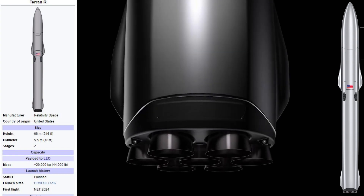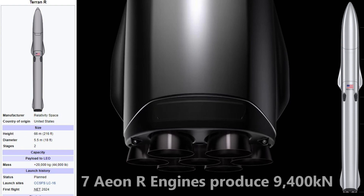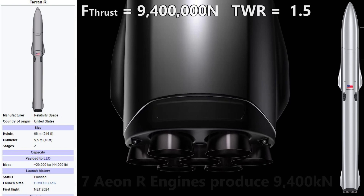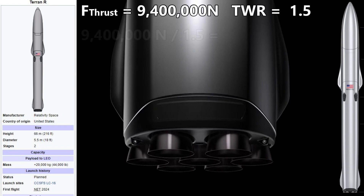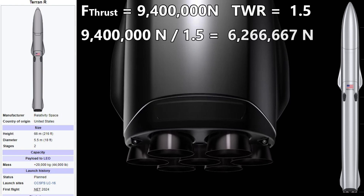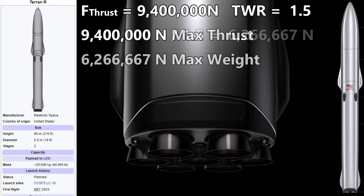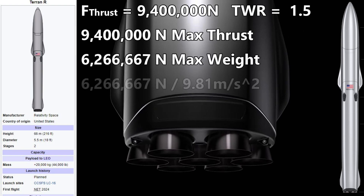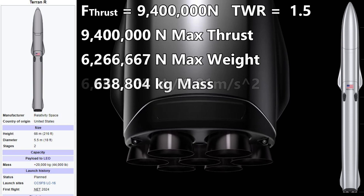Let's see what we can figure out. If the maximum thrust of the first stage engines is 9,400 kilonewtons, and the thrust to weight ratio is the usual 1.5, we can divide the maximum first stage thrust by the thrust to weight ratio, and this will tell us the maximum weight of the rocket. We find this comes out to 6,266,667 newtons. Divided by the force of gravity gives us a mass of 638,804 kilograms.